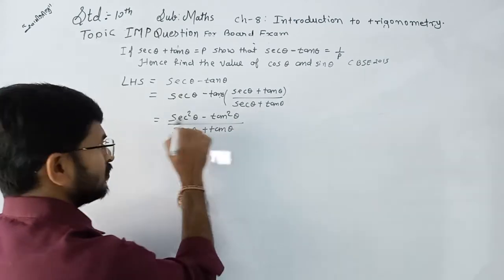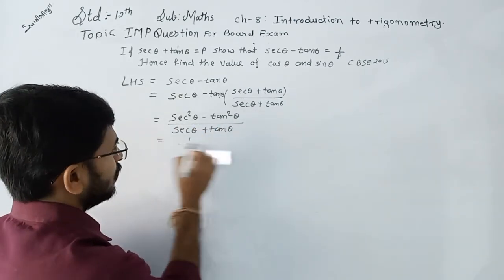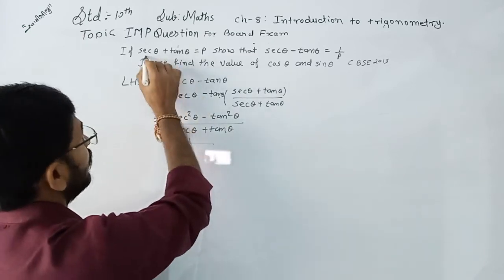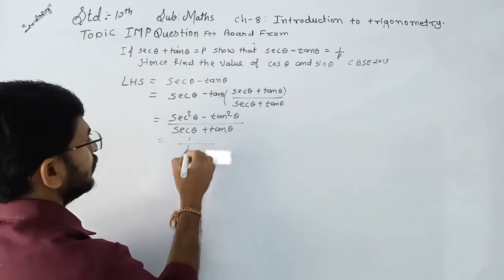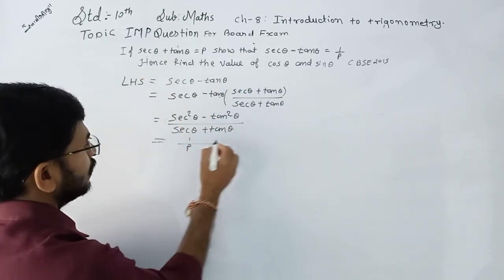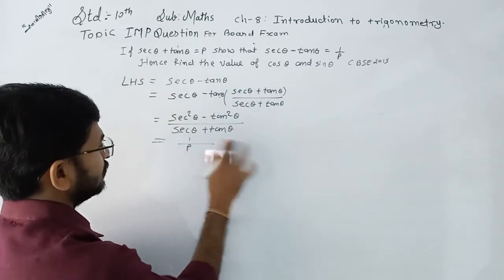Now, sec²θ - tan²θ becomes 1, so it becomes 1 upon (sec θ + tan θ), and the value of (sec θ + tan θ) is p. So left-hand side is equal to right-hand side.